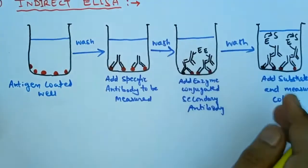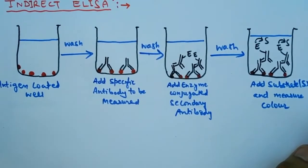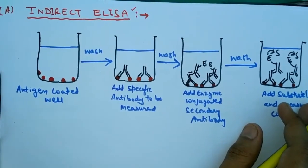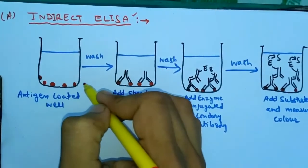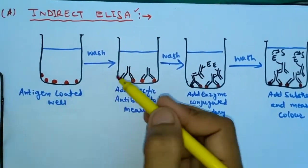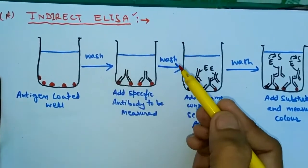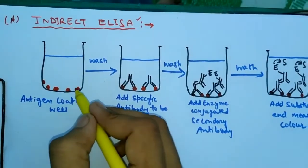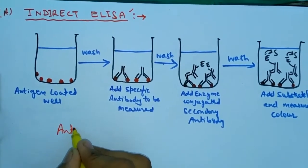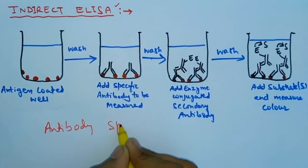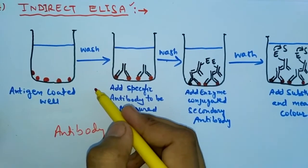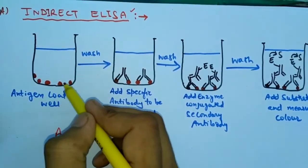Indirect ELISA — here is a diagrammatical protocol of the indirect type of ELISA. We use a well or cavity slide in which we have artificially designed antigens appropriate to the antibodies that are to be detected. The wells are coated with the antigen, and we can identify the specific antibody because for each antigen the antibody will be specific.